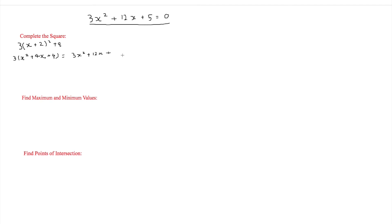We've nearly finished — we just have to find the q value, using the same step as before: 5 minus 12 equals minus 7. So we've completed the square and the answer is 3 times x plus 2 squared minus 7. If the question simply asks you to complete the square, that's all you need to give.